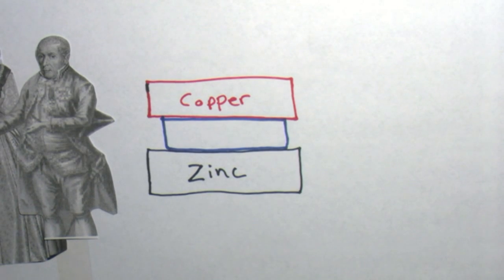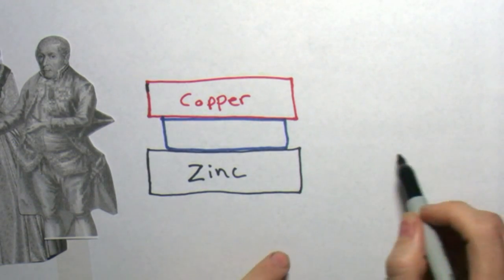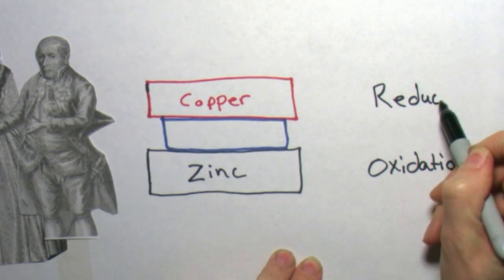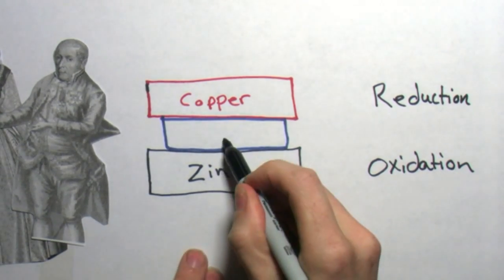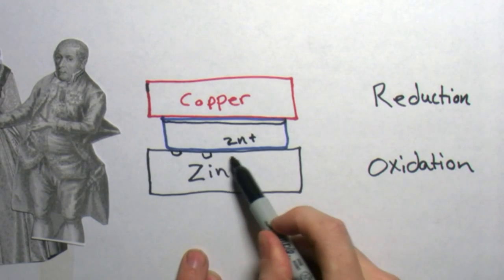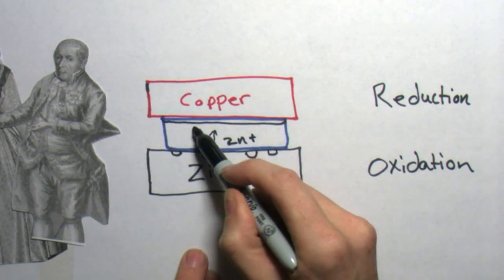We now know that the current is generated by a process of oxidation and reduction. Oxidation occurs at the more reactive electrode and reduction happens at the less reactive electrode. The electrode that's being oxidized will be consumed and positive ions will diffuse away from it.